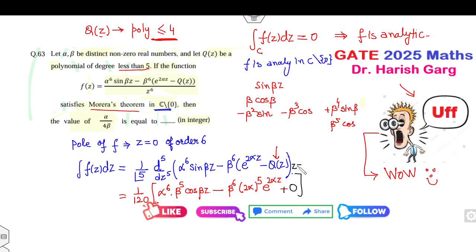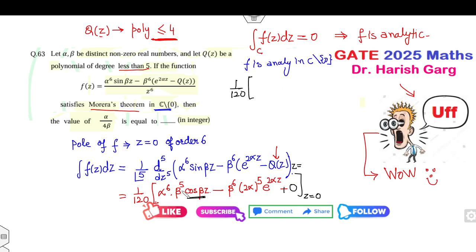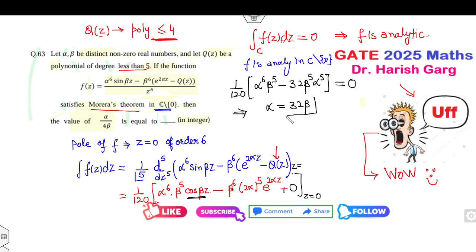Evaluating at z = 0: cos(0) = 1 and e⁰ = 1. So the residue is (1/120)[α⁶ · β⁵ − β⁶ · 32α⁵]. By Morera's theorem this equals 0, so α⁶β⁵ = 32β⁶α⁵, giving α = 32β. Substituting α = 32β into the expression α/(4β): (32β)/(4β) = 8. So the correct answer is 8.